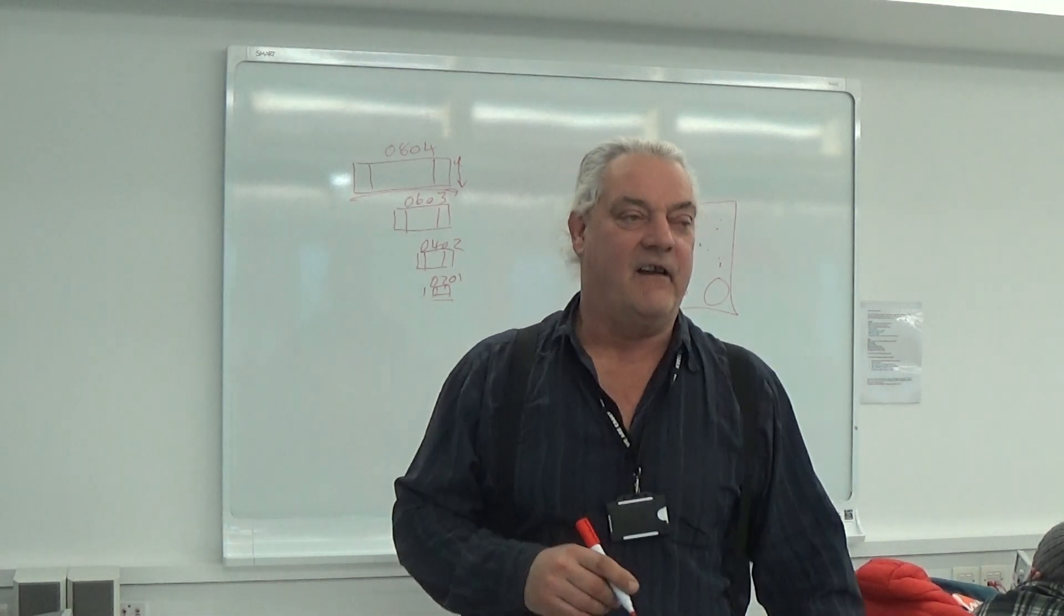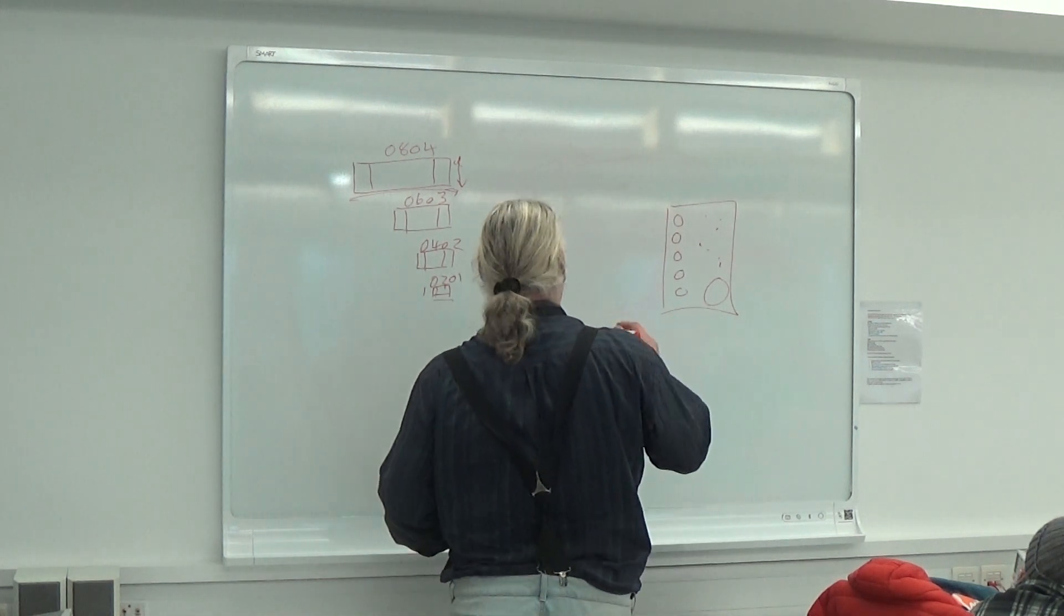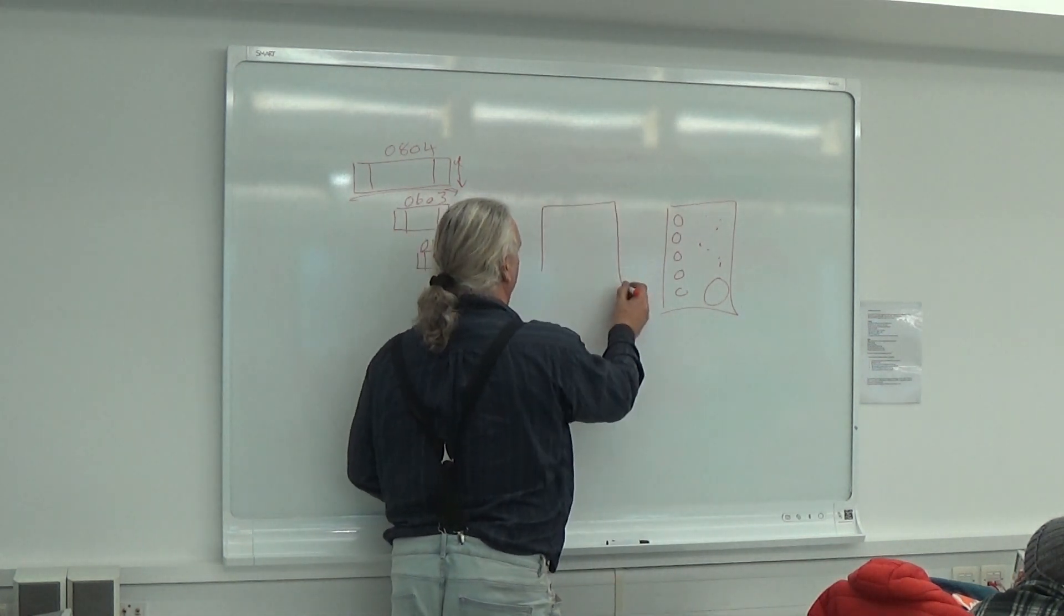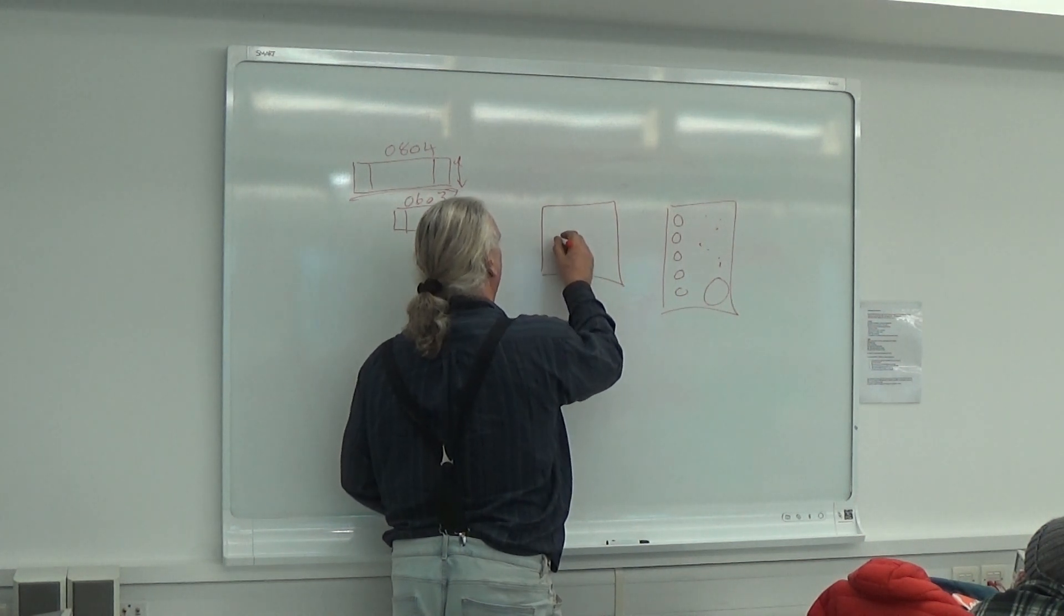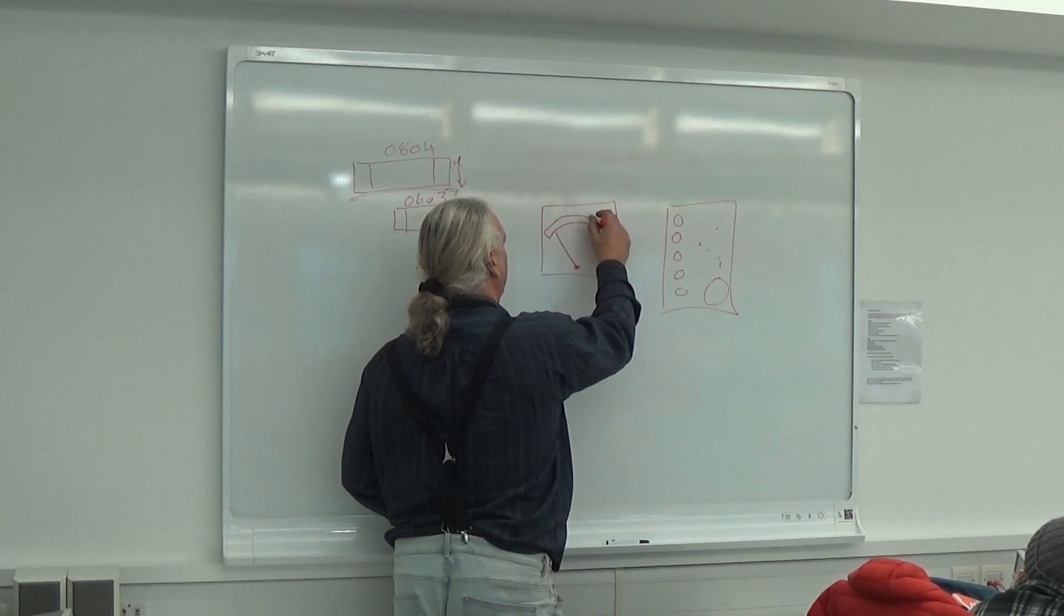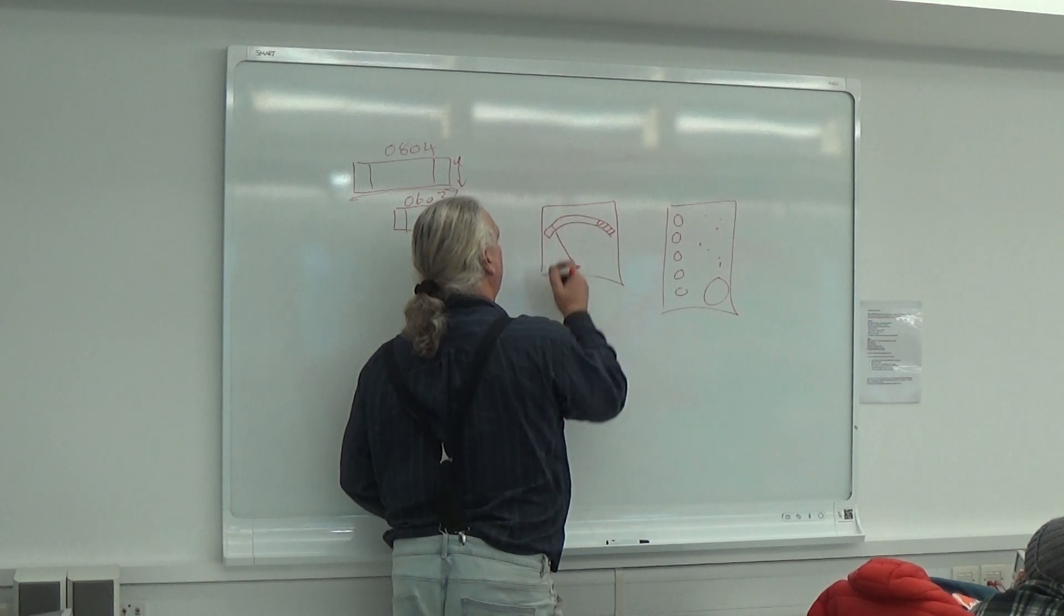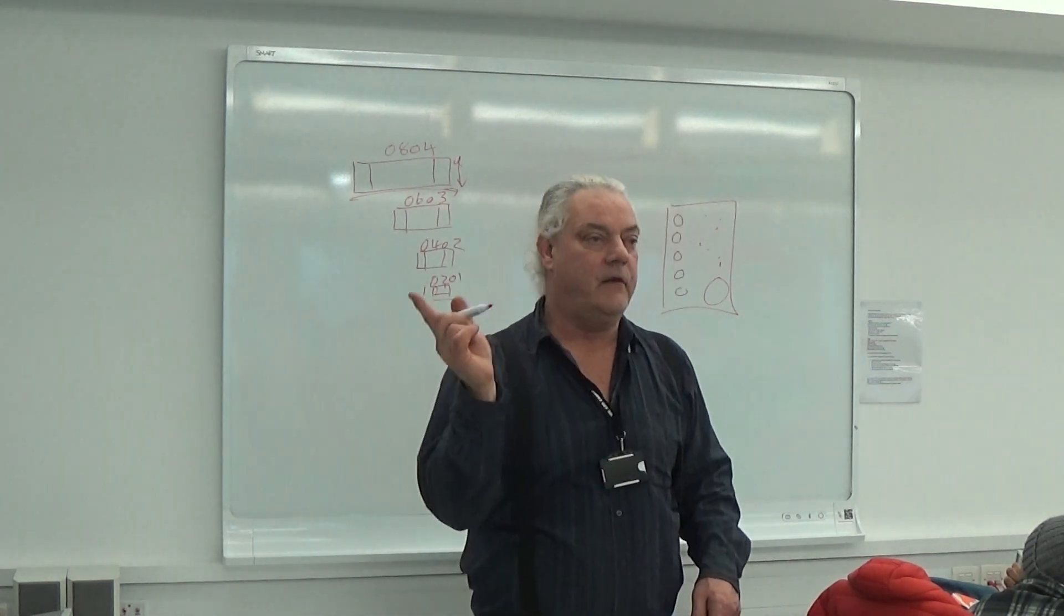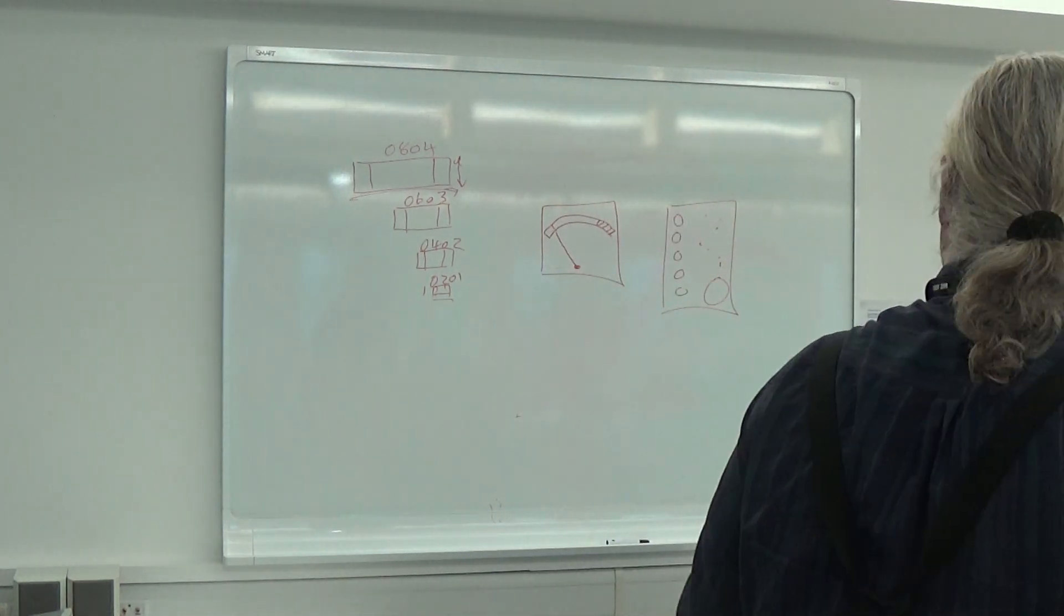How can we make that better? What a normal VU meter looks like, and if you look it up, it's usually an analogue meter, and it normally looks something like this. It normally looks something like that, so it's a good old-fashioned analogue meter. That's what people are used to for VU meters.